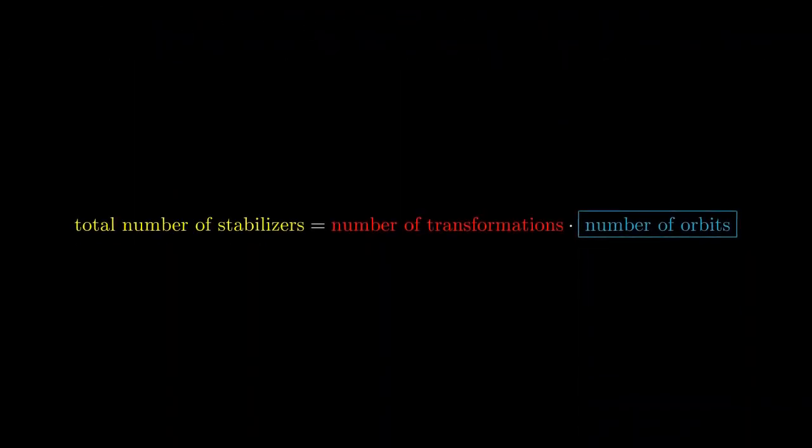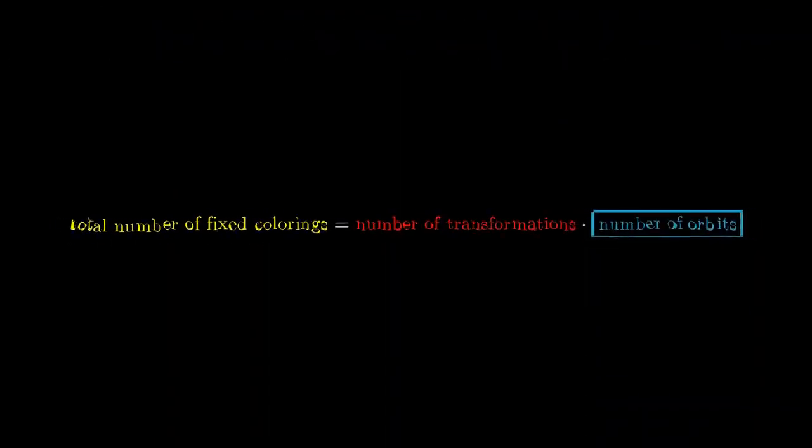We therefore have the final result. The sum of the number of colorings that t fixes for every transformation t is equal to the number of transformations times the number of orbits, which is what we wanted to find in the first place.